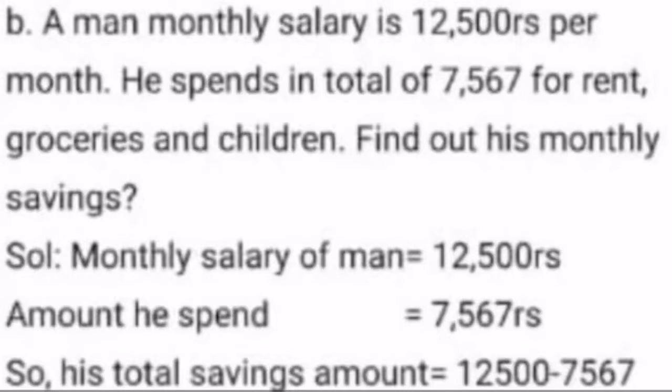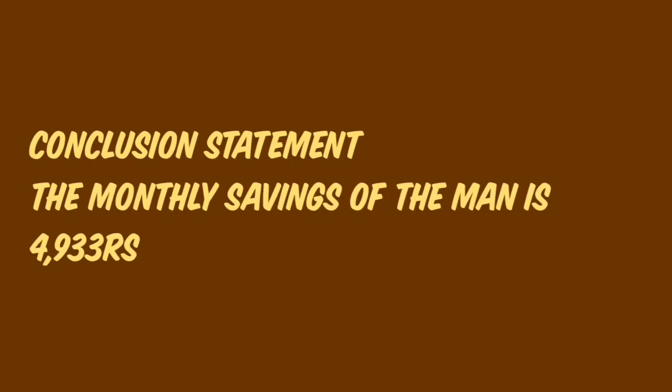Next topic is word problems related to subtraction. A man's monthly salary is 12,500 rupees. He spends a total of 7,567 rupees on rent, groceries, and his children. To find his monthly savings, we calculate: salary minus amount spent. Just like if your parents give you 10 rupees and you spend 5 rupees, your savings is 5 rupees.